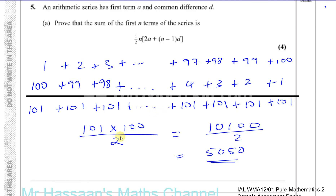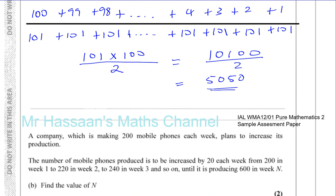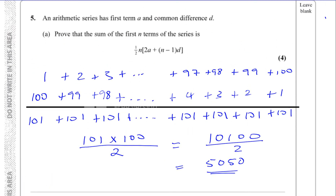This gives us an idea of how to proceed in answering this question. I'm going to follow a similar method. In our case the first term is A and the common difference is D — compared to the example where the first term is 1 and common difference is 1. So the first term will be A, the second term A plus D, the third term A plus 2D, and the last term will be A plus N minus 1 times D.